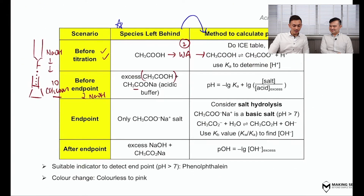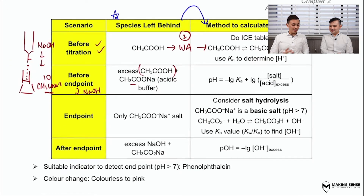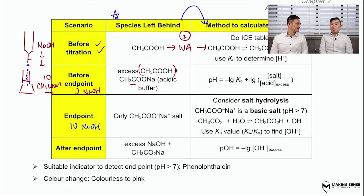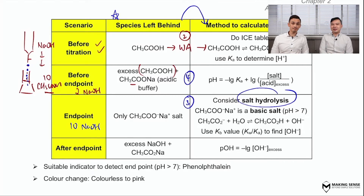So let's continue. After which we will reach the end point — meaning just nicely 10 moles of NaOH have been added. If 10 moles go into the solution, everything reacts away. What is left behind? Only the salt. In terms of calculating the pH, this will be scenario number 3 — salt hydrolysis will occur. The methods to calculate the pH are the same as in the summary table earlier. This is actually a basic salt, so you use the Kb expression to solve for the answer.